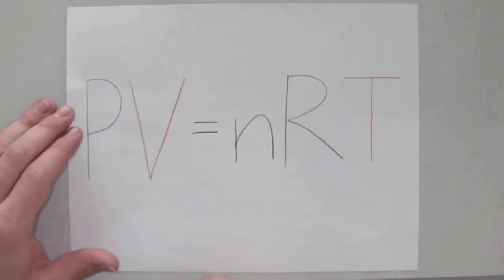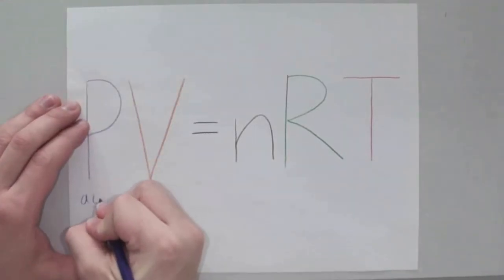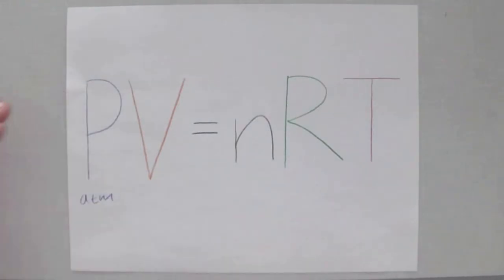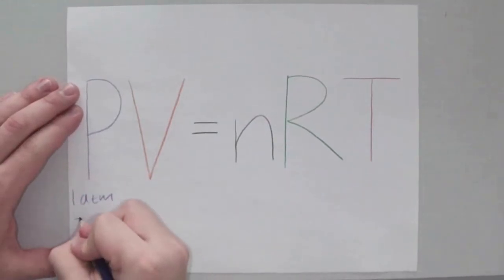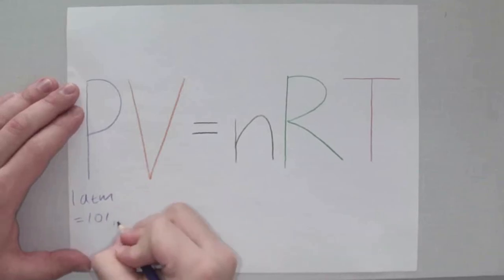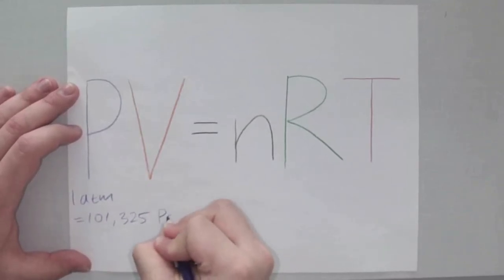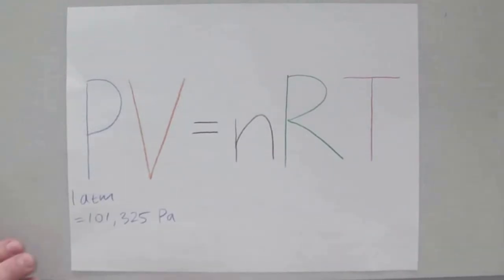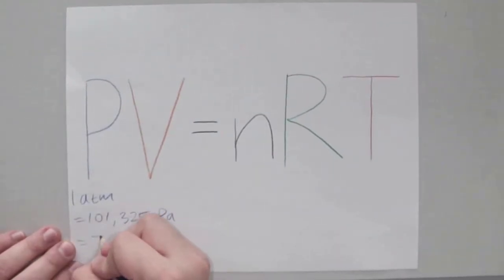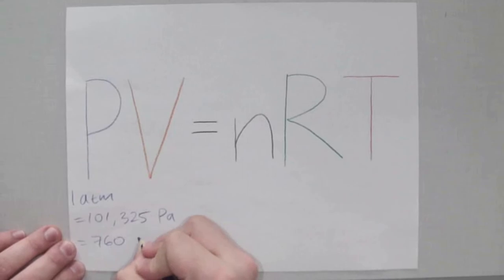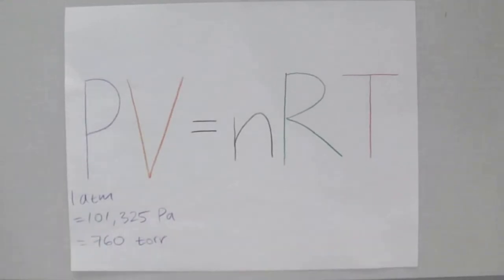All of these different properties are in different units, so the ideal gas law uses the gas constant to join all of them together. Pressure is usually going to be in atmospheres (ATM). Other units include Pascals, where one atmosphere equals 101,325 Pascals (Pa). Another unit is Torr, where one atmosphere equals 760 Torr — named after the aggressively Italian name Evangelista Torricelli.